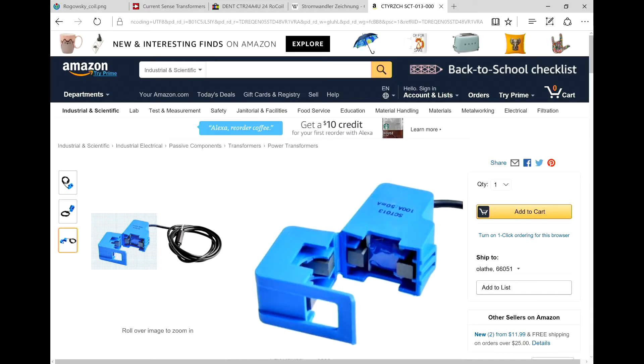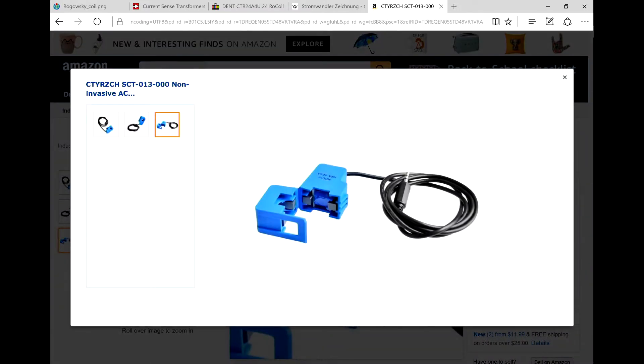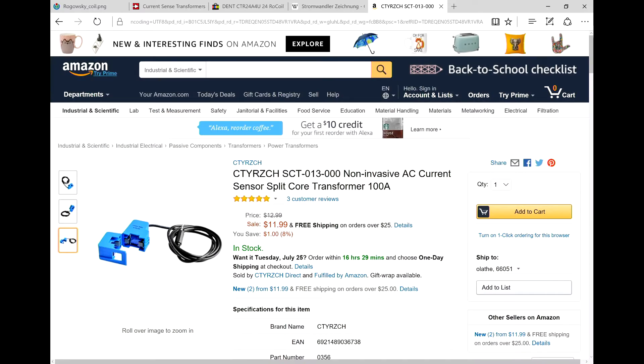And then there are simpler versions or more sophisticated versions like this, which allow you to unsnap and you just have to run your line through here. You don't have to cut your lead. You just have to separate your hot and your neutral and then you can snap this split core ferrite current transformer across it and it works real well.